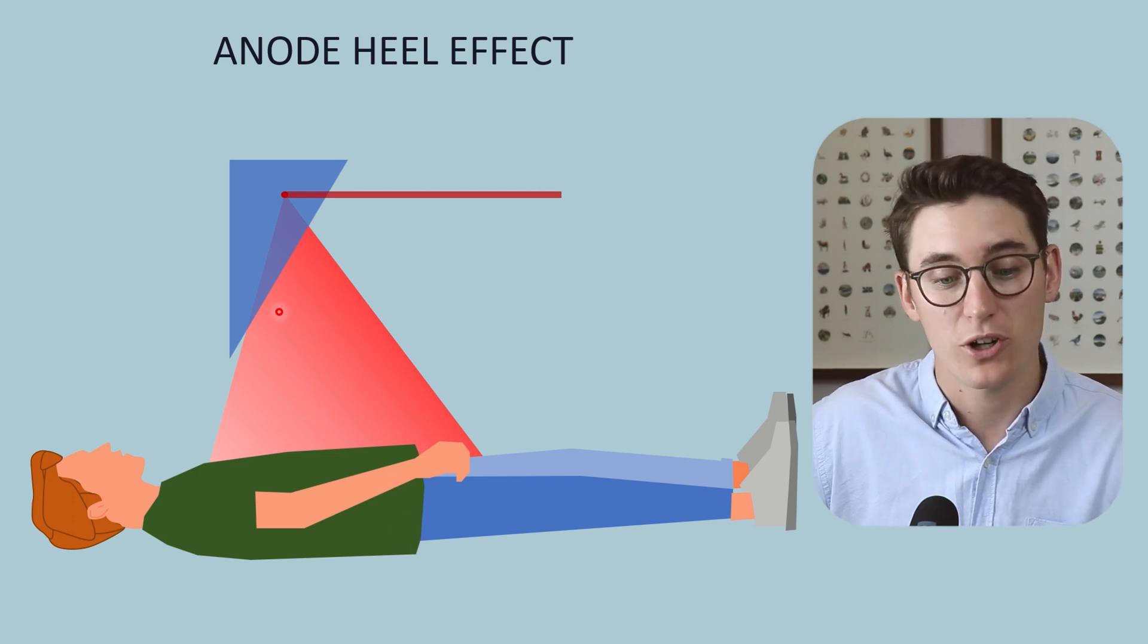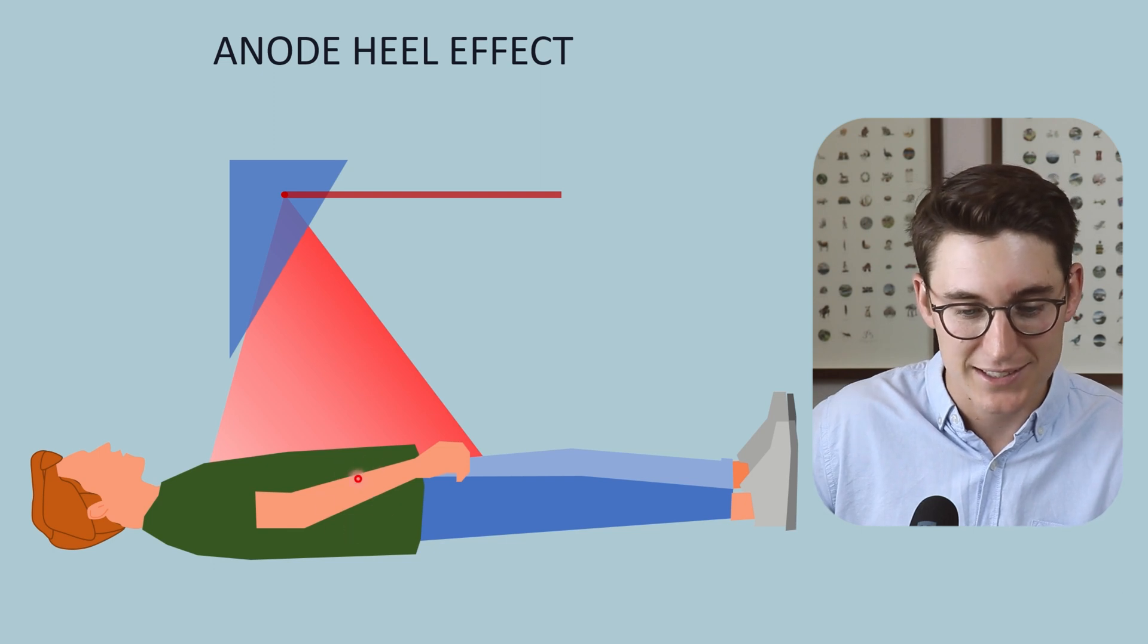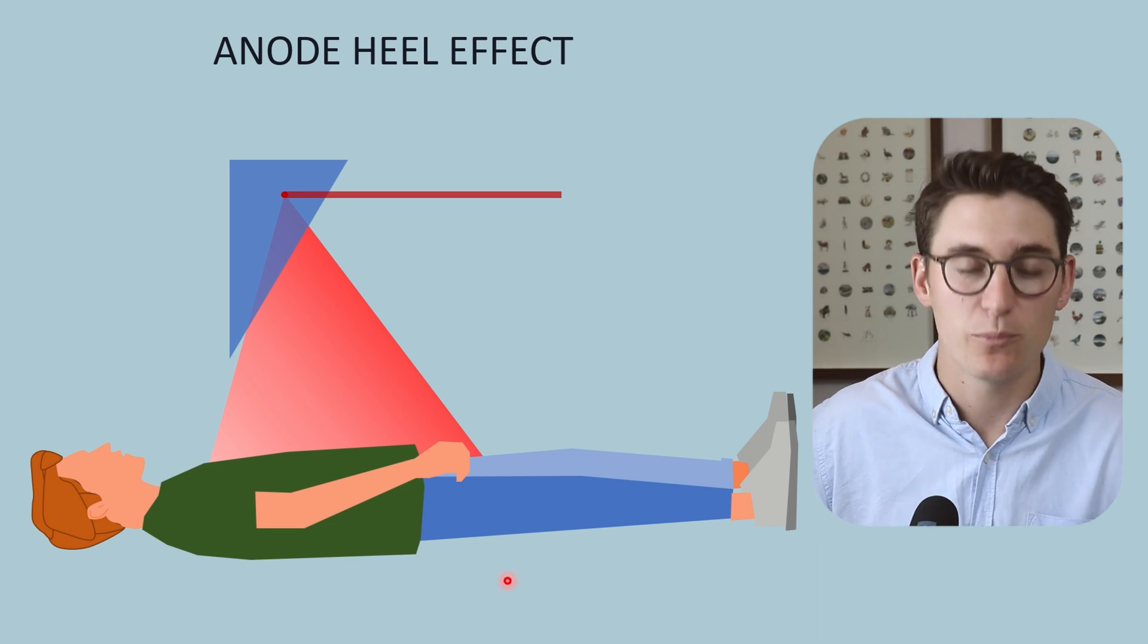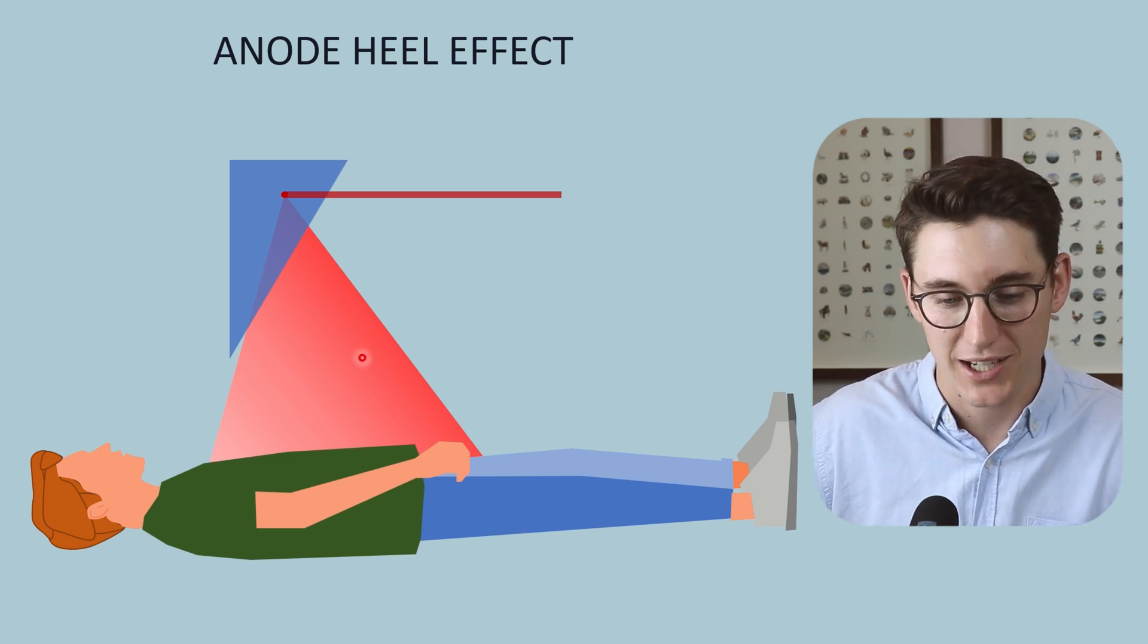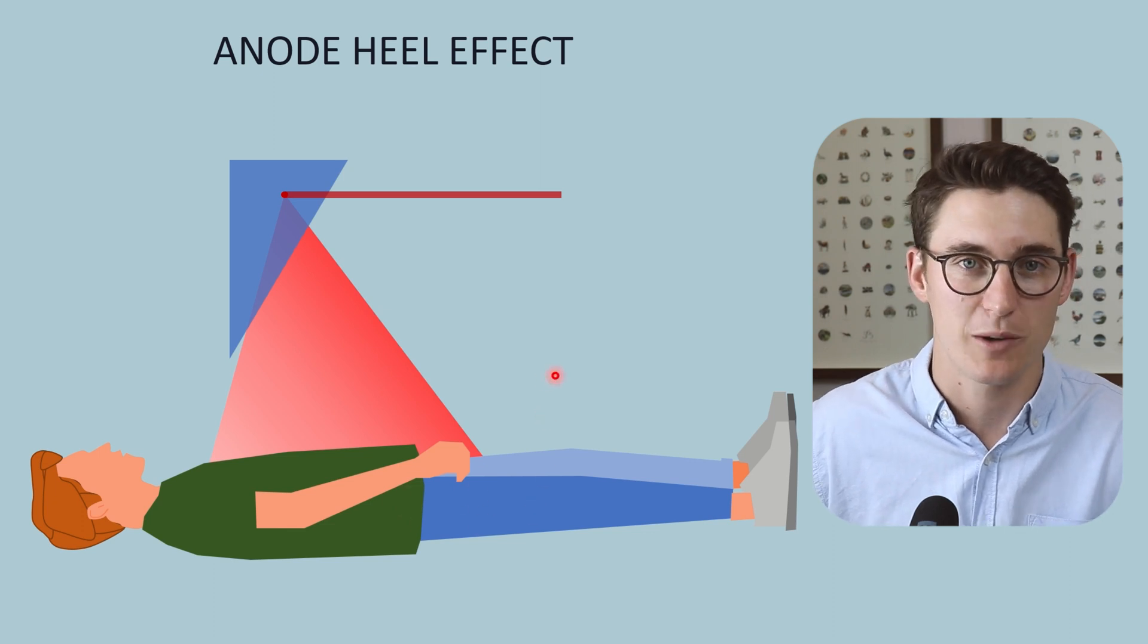The less intense part of the beam, because of the anode heel effect, can then interact with the less dense part of our patient. And the end point of that is that our detector has a more even exposure because the higher intensity beam is interacting with the higher density portion of our patient.